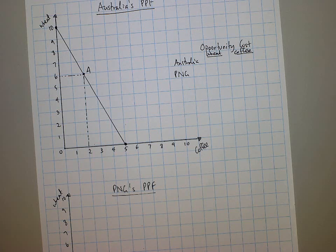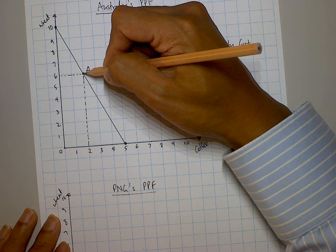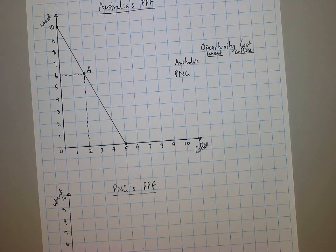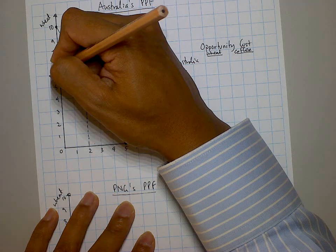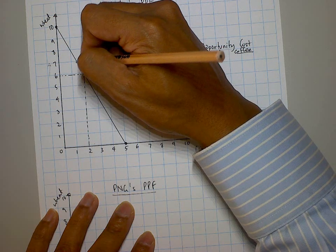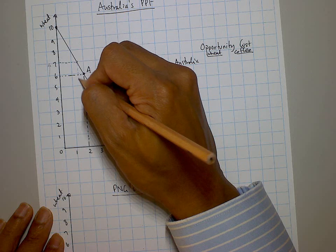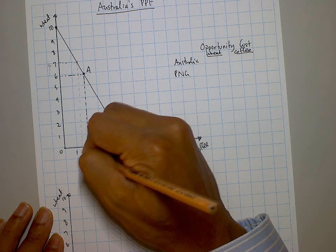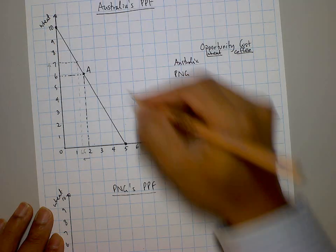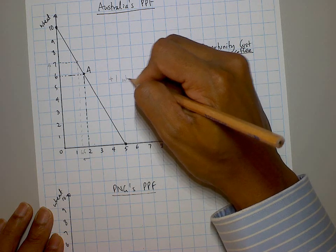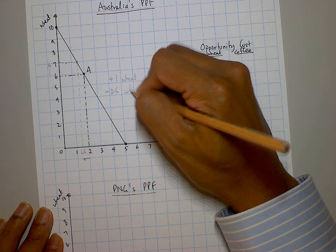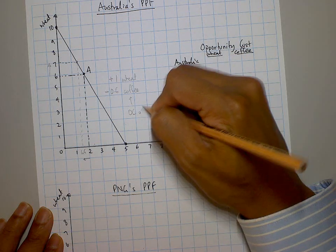To calculate the opportunity cost of wheat, starting at point A, you need to figure out how many units of coffee you're giving up. Moving from 6 units of wheat to 7 units of wheat, we can see we move from 2 to 1.5 units of coffee. So we're adding one unit of wheat and giving up half a unit of coffee. That is the opportunity cost of wheat for Australia.